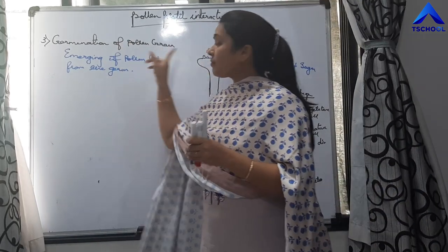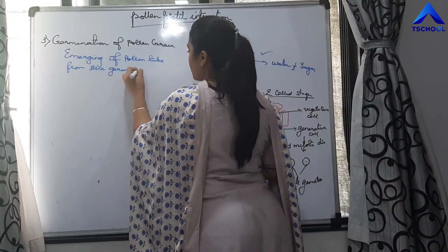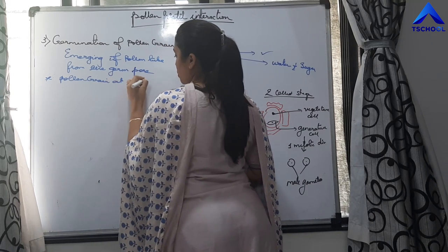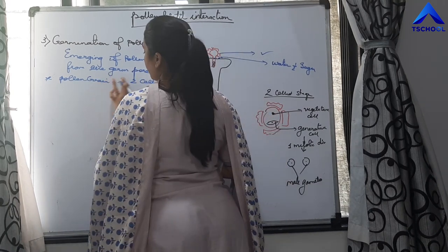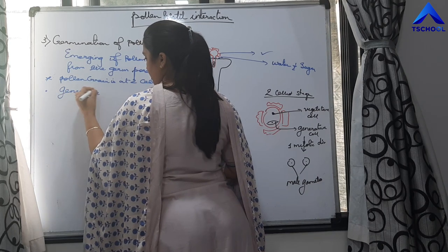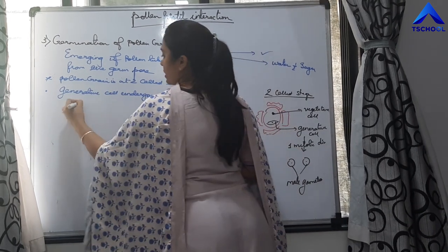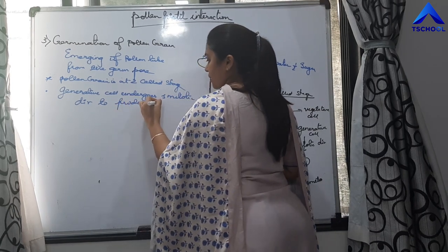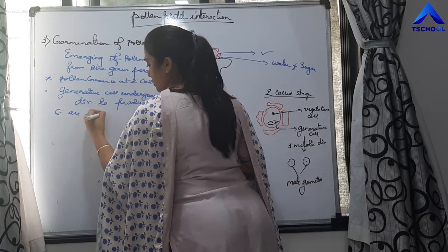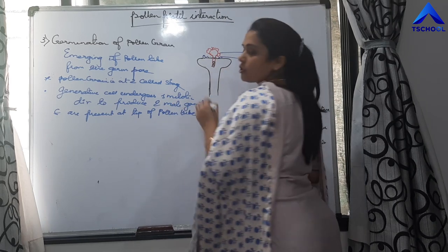So, germination of the pollen grain involves emergence of the pollen tube from the germ pore. The pollen grain is at a two-cell stage. The generative cell undergoes one mitotic division to produce two male gametes which are present at the tip of the pollen tube.